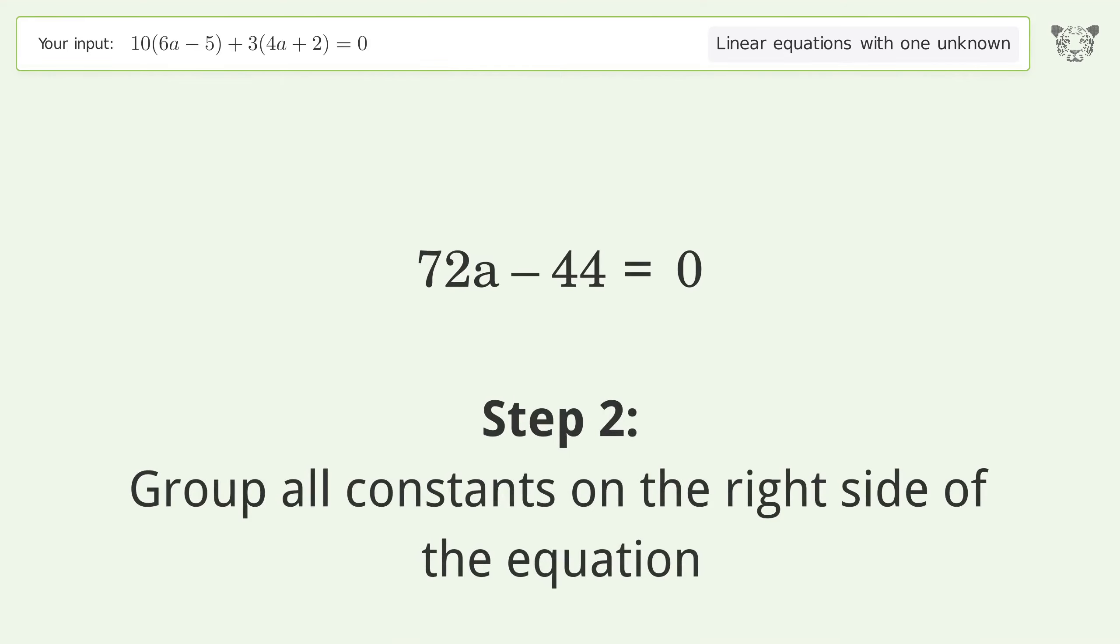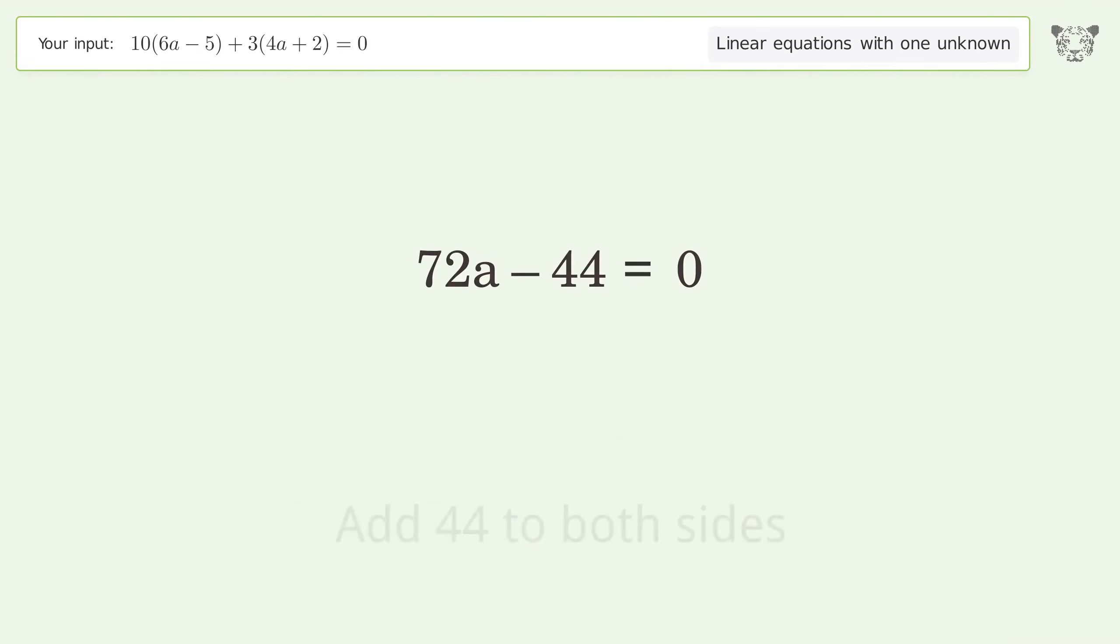Group all constants on the right side of the equation. Add 44 to both sides. Simplify the arithmetic.